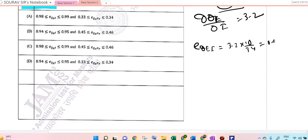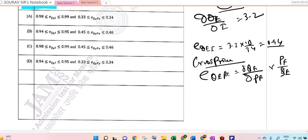E of θE with respect to I equals 3.2 times 10 divided by 34, so that is 0.94. Now the cross-price elasticity of demand, E of θE with respect to PF.